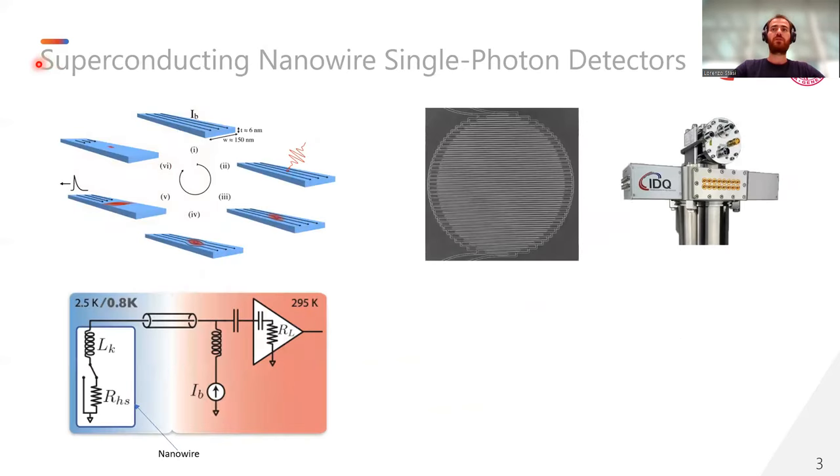That's why I would like to talk about a different approach that exploits superconducting nanowire single photon detectors. SNSPDs consist of a meandering nanowire shape, closely biased to the critical current. When a photon is absorbed by the nanowire, Cooper pairs are broken and a resistive region is formed. Then, this region is expanding up to the point where the entire cross section is resistive, and then the current leaves the nanowire and goes into the readout circuit when we can observe a pulse. Then, the nanowire has the time to cool down again, becoming superconductive again, and then it is ready to detect another photon.